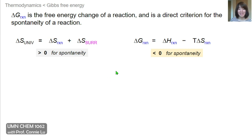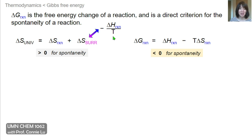As a quick reminder, we can split the universe into its two components: a system, which in this case is the reaction, and its surroundings. The entropy change in the surroundings is directly related to the enthalpy change of the reaction at a specific temperature, because this equality describes the heat transfer between the system and its surroundings. By rewriting this, we can define this new thermodynamic function, delta G, as being equal to delta H minus temperature times delta S.